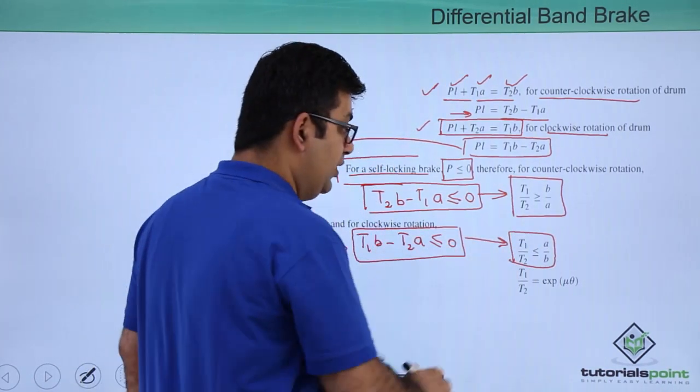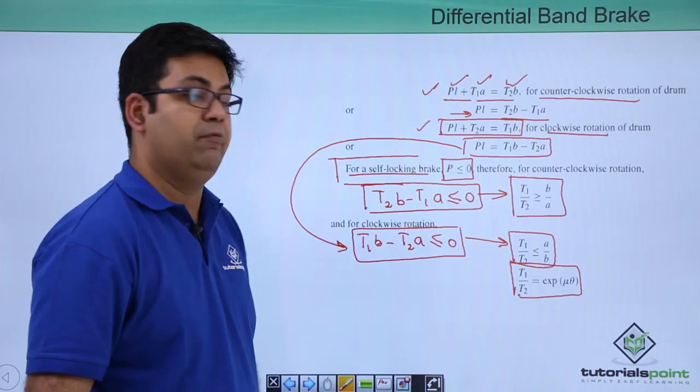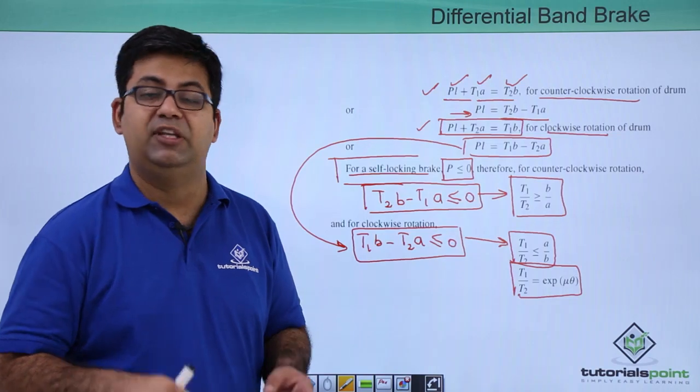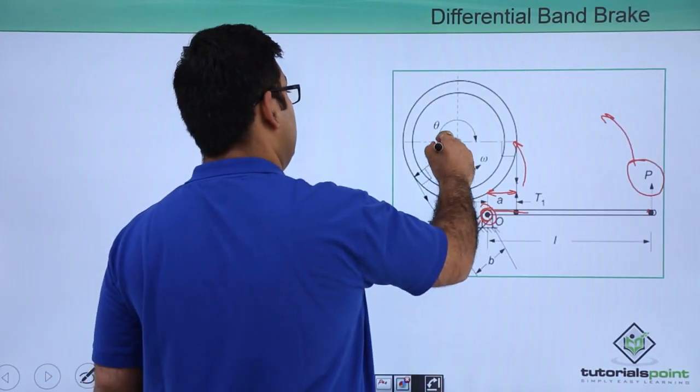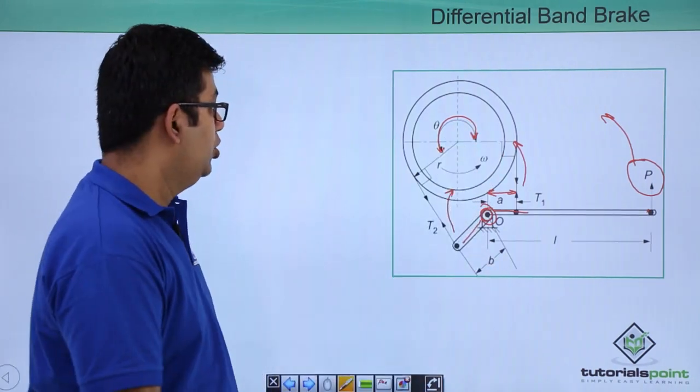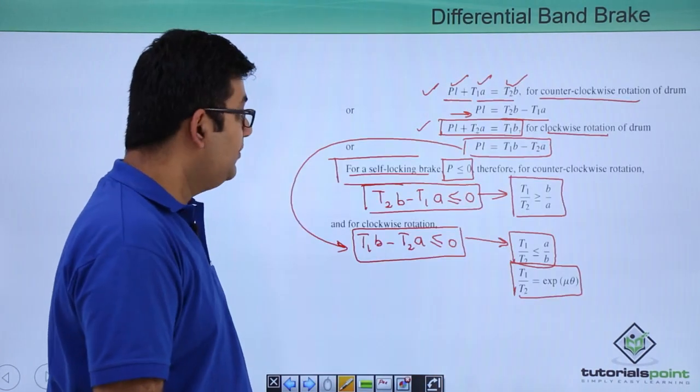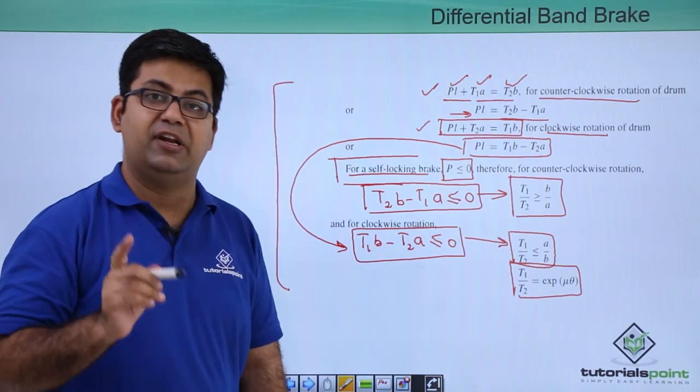Always remember that the ratio of tensions in the bands will be equal to e^(μθ), where θ is the angle of wrap. This is θ.